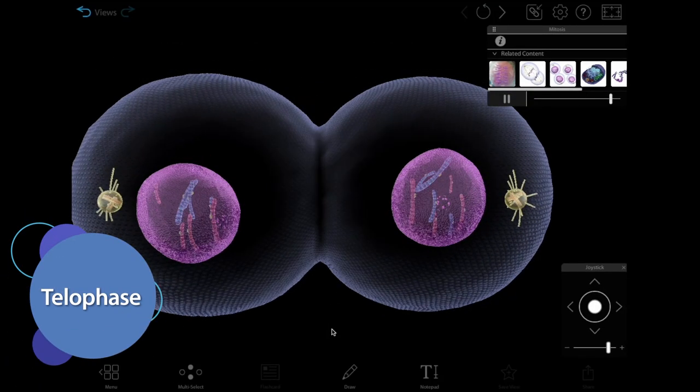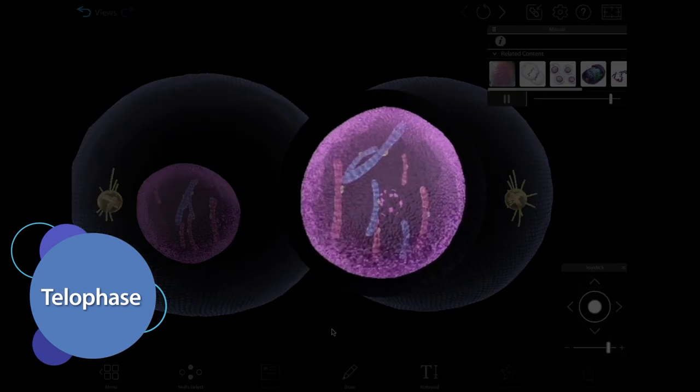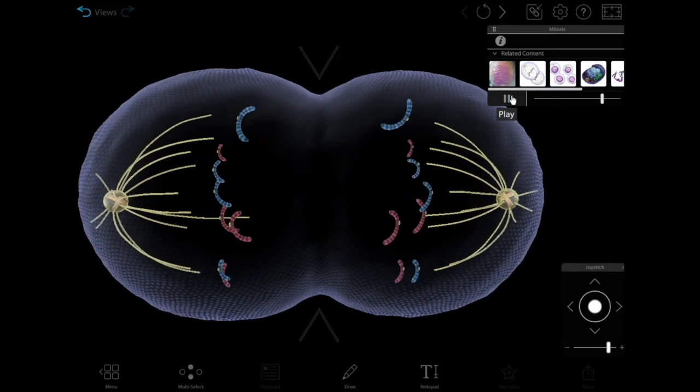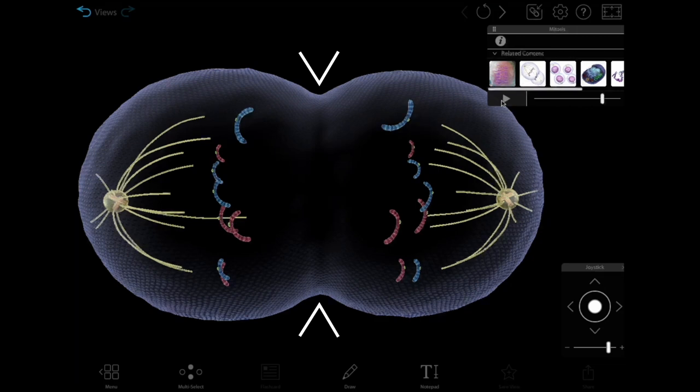During telophase, a new nuclear envelope forms around each set of chromosomes. The mitotic spindle fibers get pulled back into the centrosomes, and the cell forms a cleavage furrow in preparation for splitting.